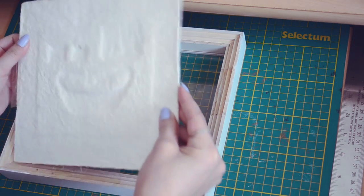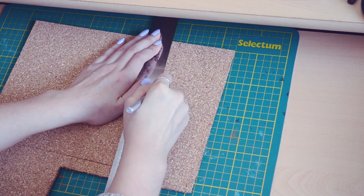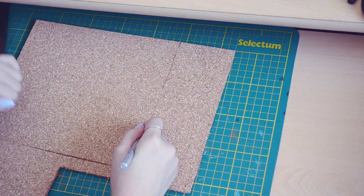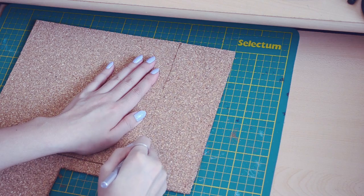The first step is to take apart your frame and take any old art out of it, and cut your corkboard to the inner size of the frame. Also, cut your fabric about 2 inches larger on each side.